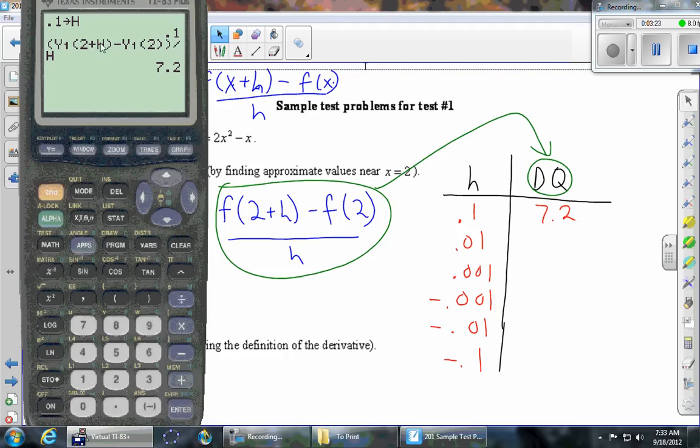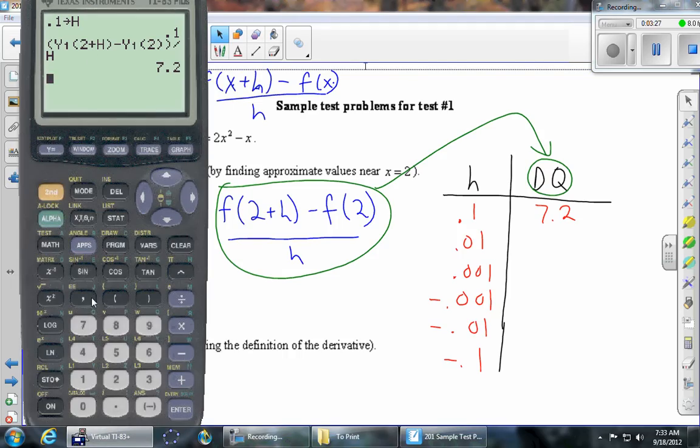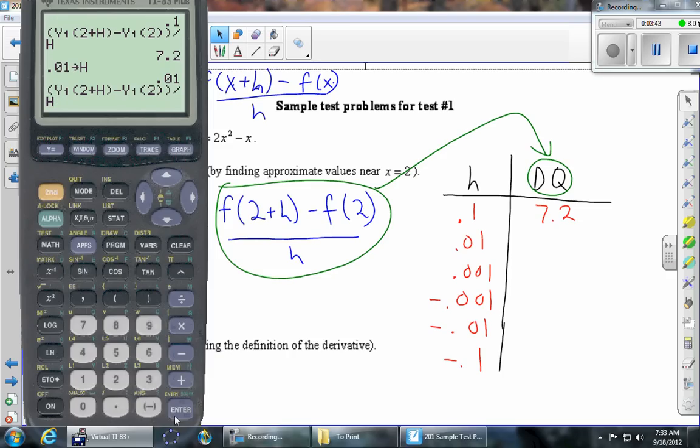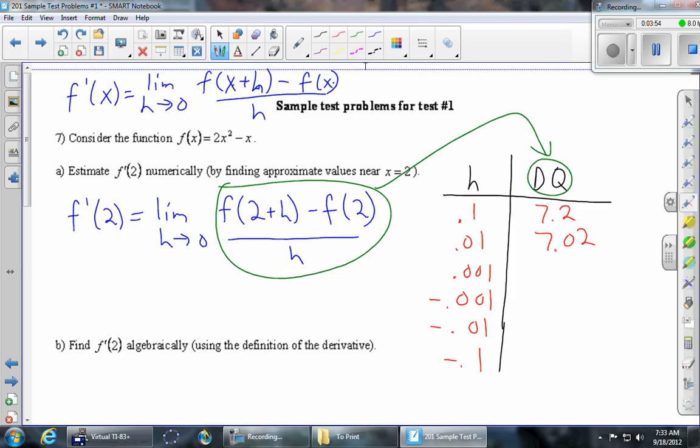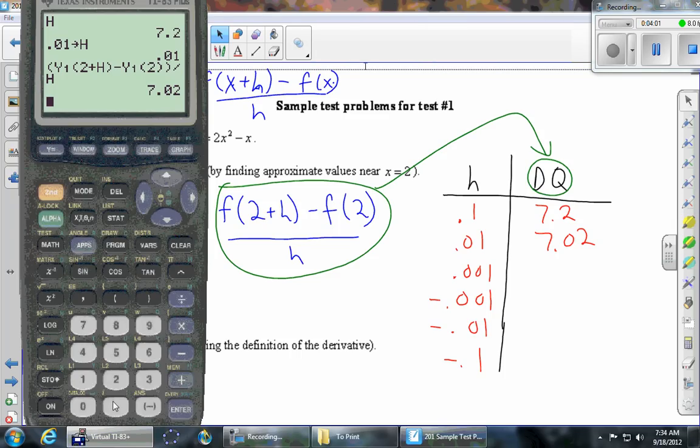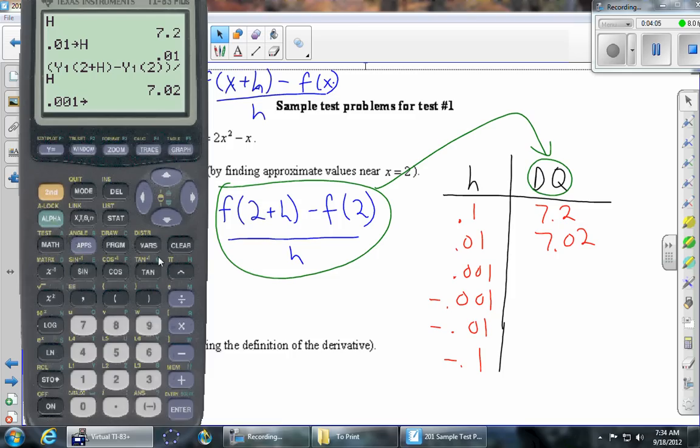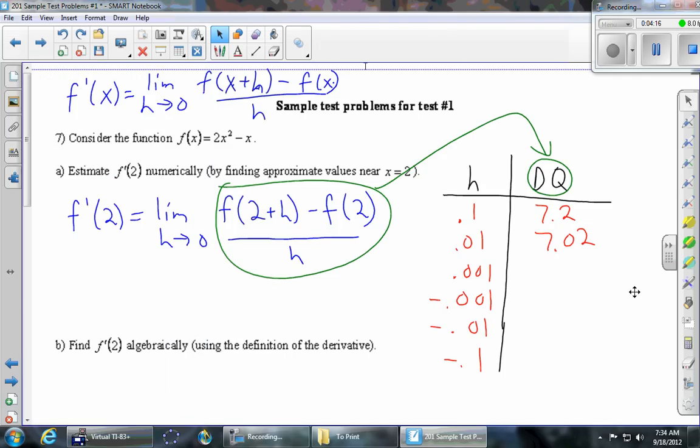And then we'll do the same thing. Now I want h to be 0.01. So I'll do 0.01 and then store it as alpha h. But I don't really feel like typing that whole thing again. So if we do second entry, it retypes the previous line. And now I'll just hit enter. And it will calculate this but with an updated value of h. Now it's 0.01. So the next number in our table is 7.02. And we'll just go ahead and fill in a few other ones of these. So now we'll let h = 0.001, store that as alpha h, and then second entry twice. And hit enter, and we get 7.002.